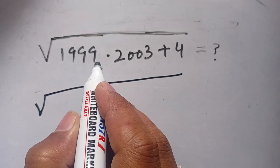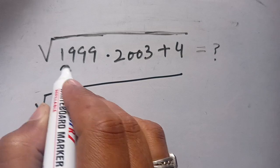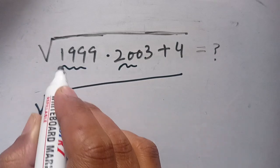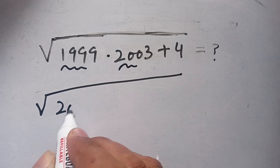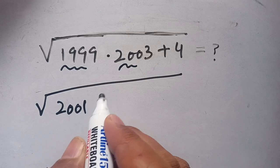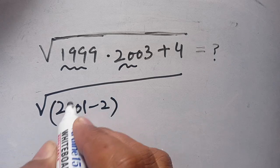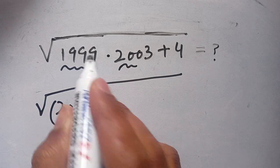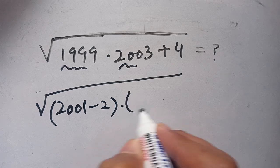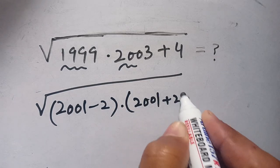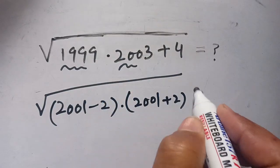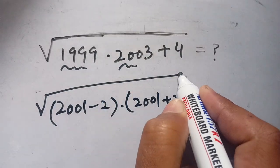We break down both terms. 1999 can be written as 2001 minus 2, which becomes 1999. Times 2001 plus 2, which becomes 2003, and plus 4 as it is.